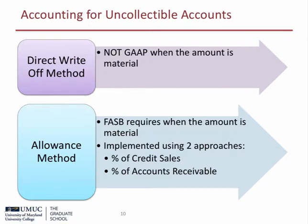There are various methods to account for bad debts. First, the direct write-off method. This method is not GAAP when the amount is material. It does not match bad debt expense in the same period as when the revenue was earned and recognized. It will cause accounts receivable to be overstated in the period the account is written off. Next, the allowance method. FASB requires the allowance method when the amount is material. This method can be implemented using two different approaches: the first is called the percentage of credit sales, and the second is called the percentage of accounts receivable.